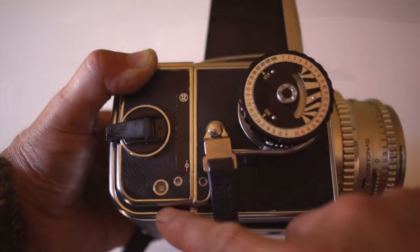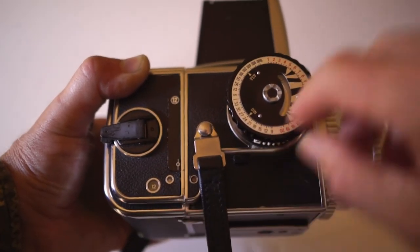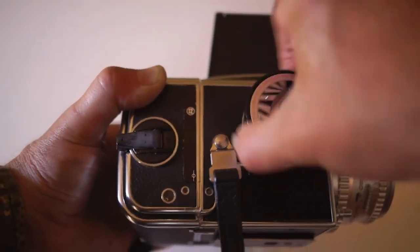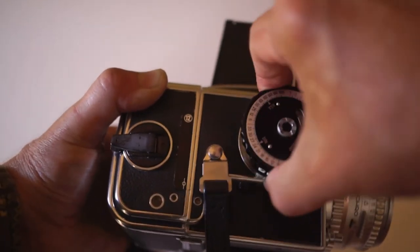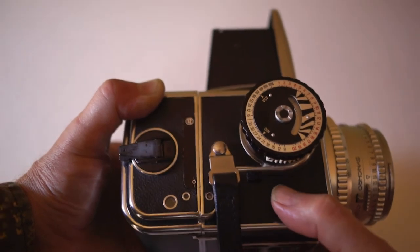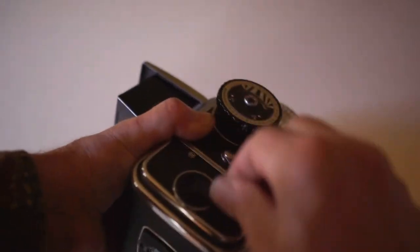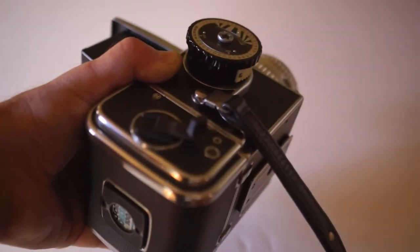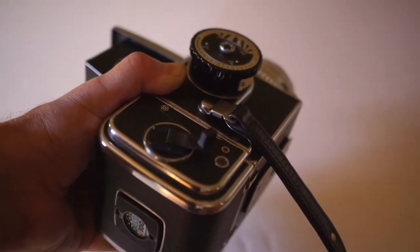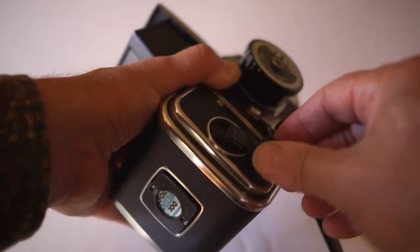Here I have just shot my 12th exposure. I'm going to turn the advance knob to get the mirror back down again, so we're ready to start our next roll. And then I'm going to turn this crank again until I can hear the film come off of there. There's a lot less tension on it. And then we're ready to remove the film.